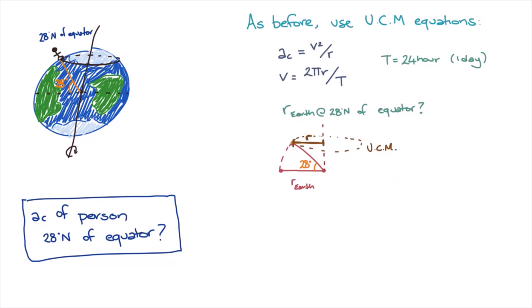To work out the length of the radius r, we can use trigonometry. The radius of the path and the axis of the earth's rotation meet at right angles. If we label this angle theta, we can see that the angle theta is 90 minus 28 degrees, since the angle between the radius of the equator and the axis of the earth is 90 degrees in total.